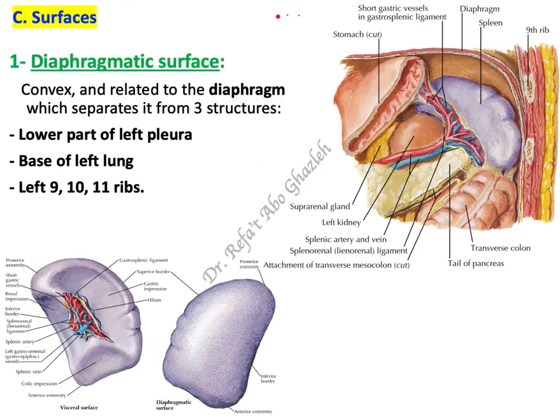The spleen has two surfaces. The first is the smooth diaphragmatic surface, which is convex and sits against the diaphragm — we cannot see it from the front as it faces the back. The second is the irregular, concave visceral surface. The diaphragmatic surface separates the spleen from the base of the left lung and the lower part of the pleura, as well as from ribs 9, 10, and 11.